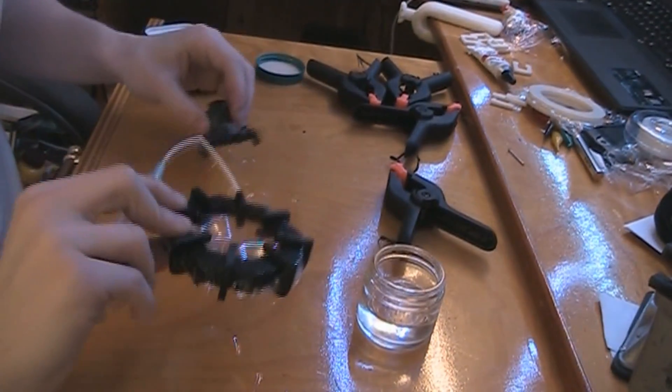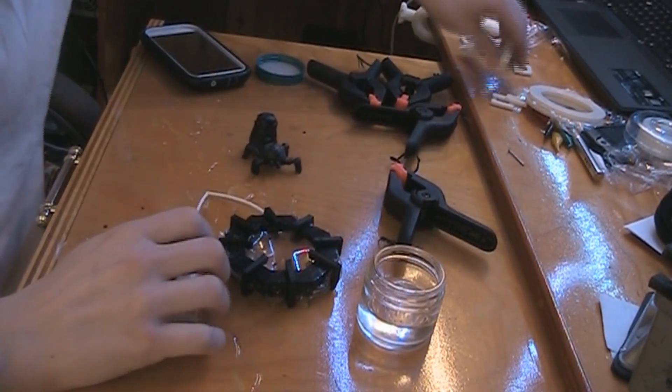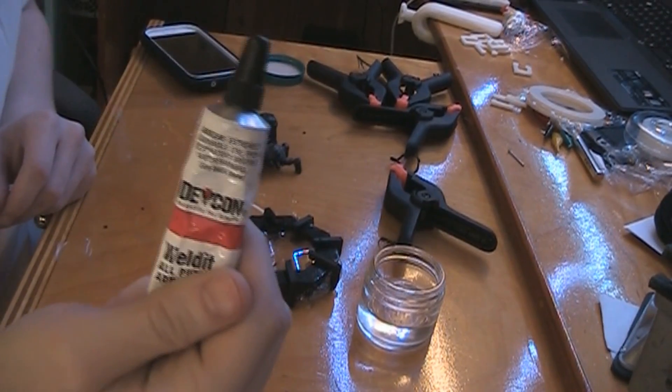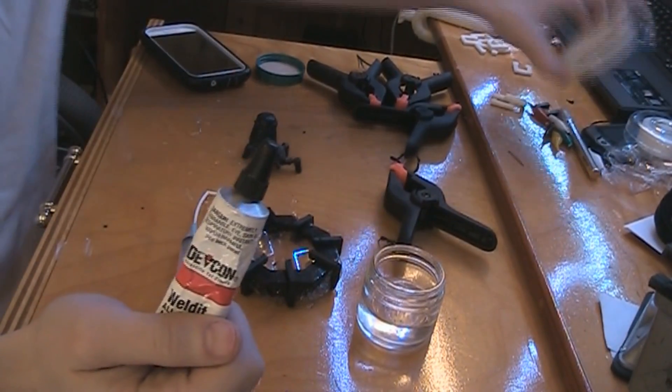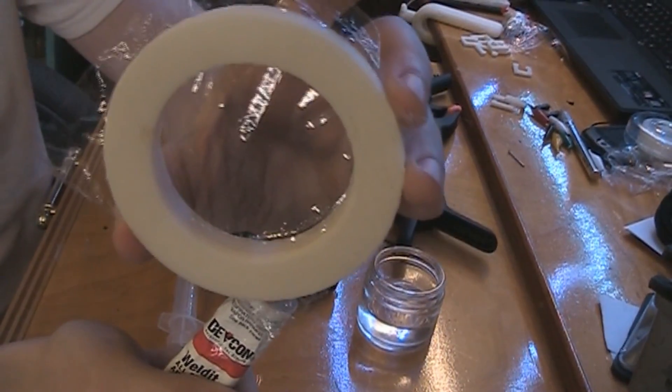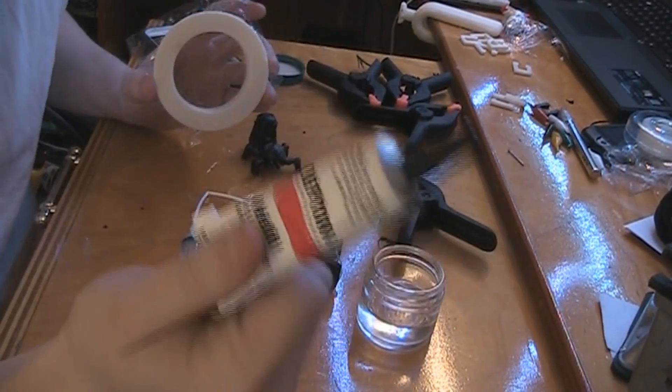If you're having a problem with leaking like I am, put some of this stuff in between the two mating parts when you're making these disks and that should get rid of all the leaks for you.